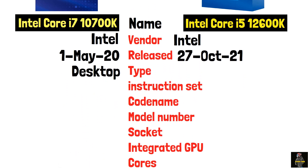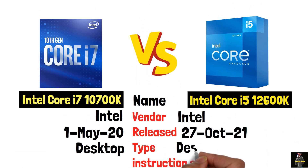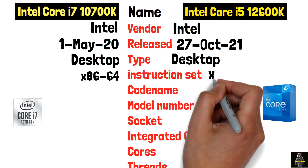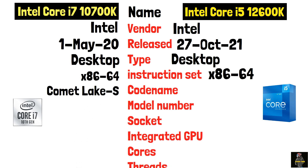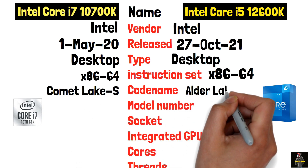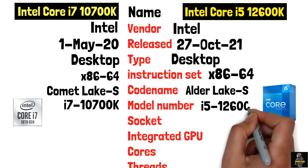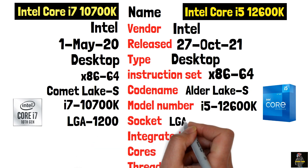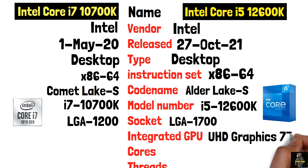Both are desktop processors with the x86-64 instruction set. The i7-10700K uses the Comet Lake S architecture on the LGA-1200 socket, while the i5-12600K uses Alder Lake S on the LGA-1700 socket. The i5-12600K features Intel UHD Graphics 770.